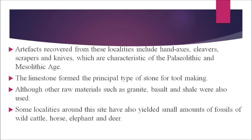The artifacts recovered from these localities include hand axes, cleavers, scrapers, and knives, which are characteristic of the Paleolithic and Mesolithic ages. Limestone formed the principal type of stone for tool making, although other raw materials such as granite, basalt, and shale were also used by early humans.